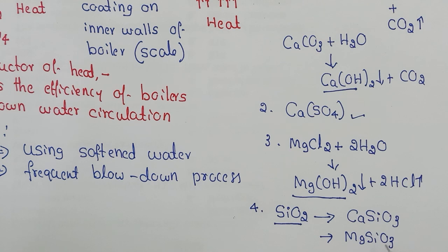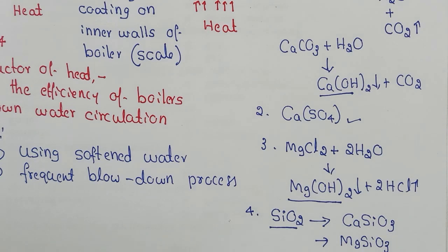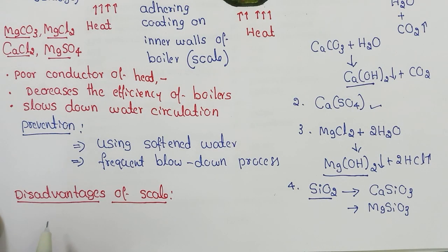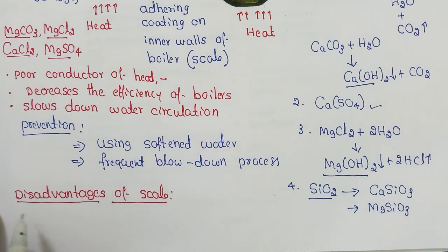One important source of silica in water is the sand filter — used to filter larger impurities, but small amounts of sand enter the boiler feed water and combine with calcium and magnesium salts to form highly adherent calcium silicate and magnesium silicate scales. Similar to sludge, scales also cause several disadvantages, including wastage of fuel, because scales are bad conductors of heat.